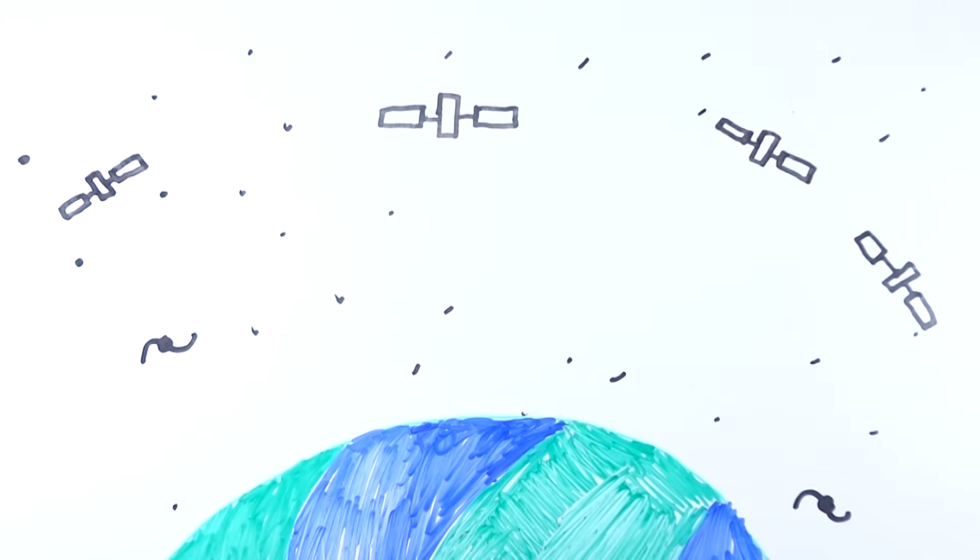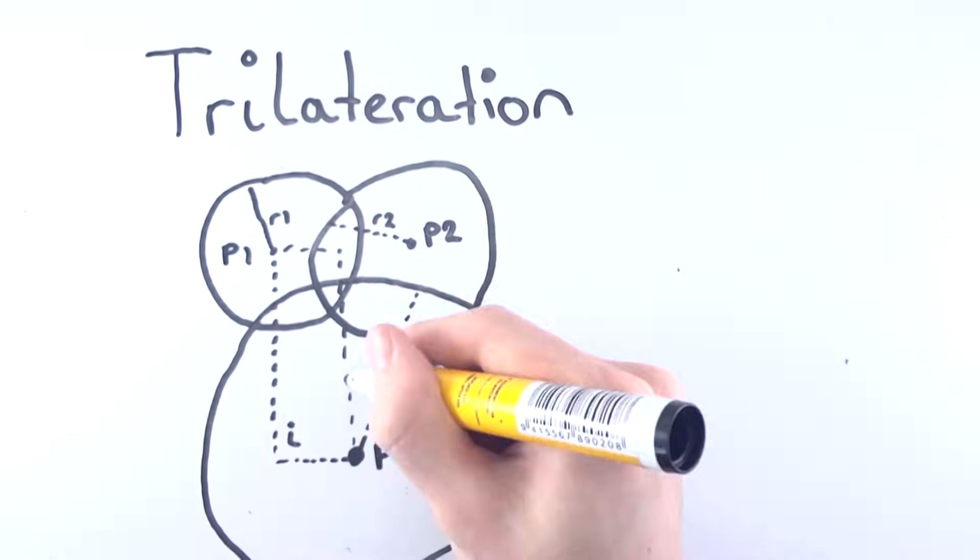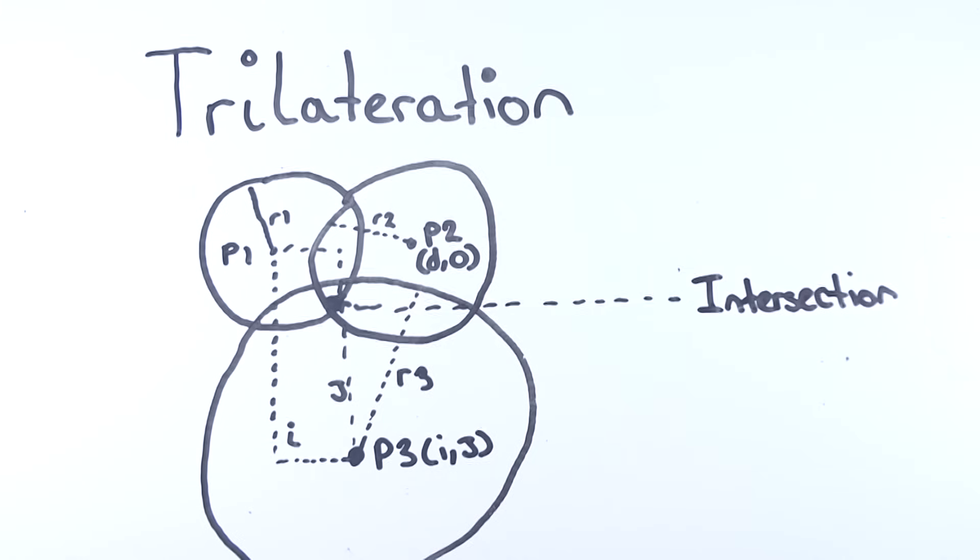How do GPS's work? GPS stands for Global Positioning System, which works through trilateration, not triangulation or multilateration, which is commonly misconceived.